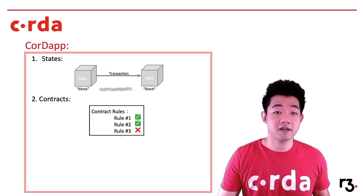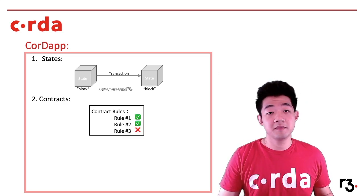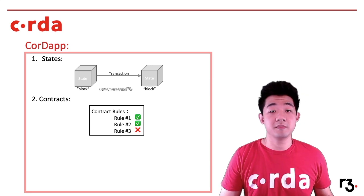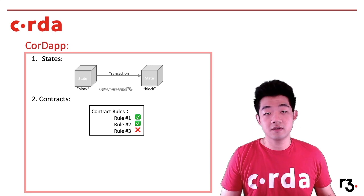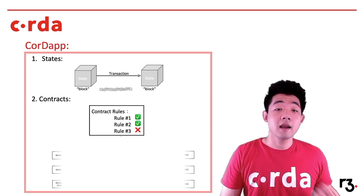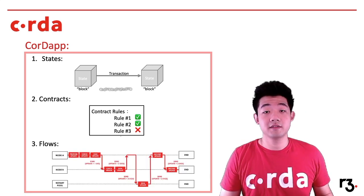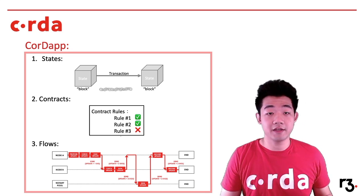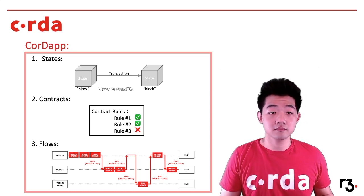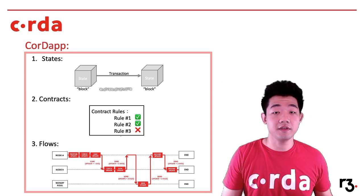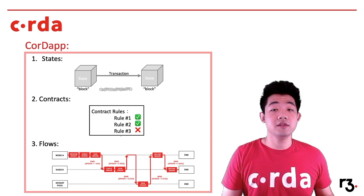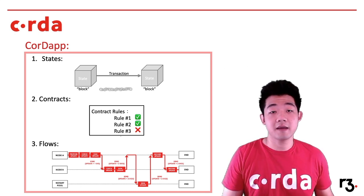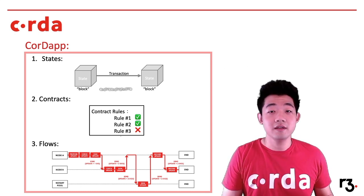The second type are the contract objects. The contract objects are the business rules that need to be followed during a business transaction, and they will be used to check for the validity of each transaction as well. Lastly, there are the flow objects, which are the executables in the application — they define the business logic in code. We will go into the details of each object in our future videos. As a software developer, you will only need to learn how to code these three types of objects, then you will be ready to build your very first blockchain application on Corda.